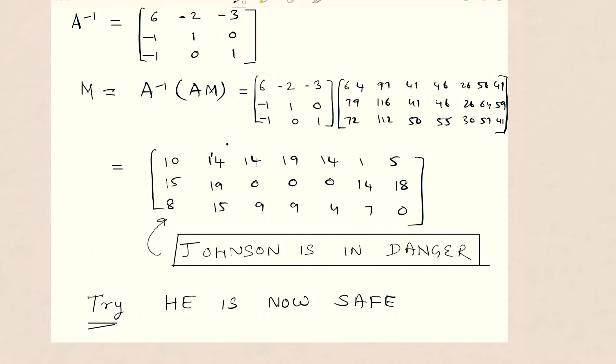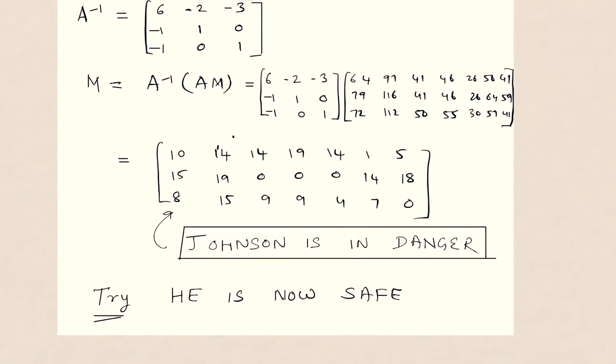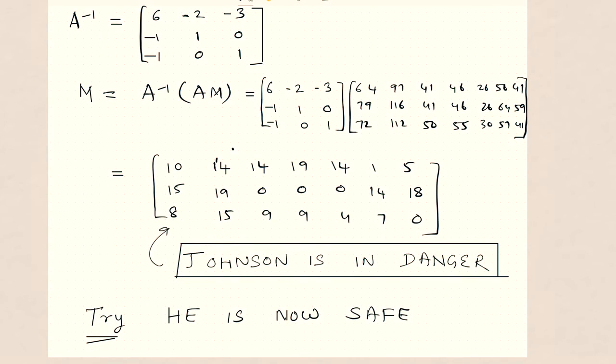Now imagine our friend gets this matrix and they want to decode it. So this is the decoding matrix, which is already given. So A inverse. So they have this key system. Now this A inverse is again multiplied with AM. AM is the encoded one. So A inverse into AM. Let me show it here.